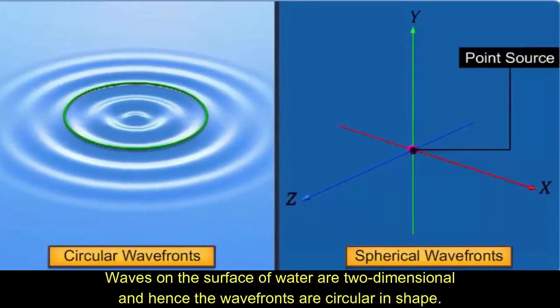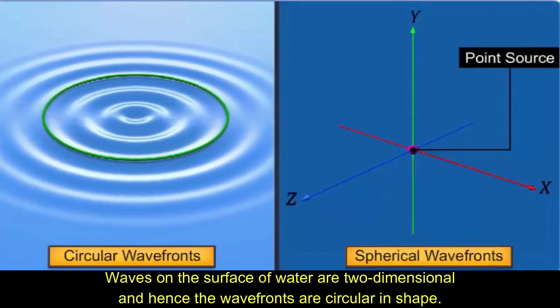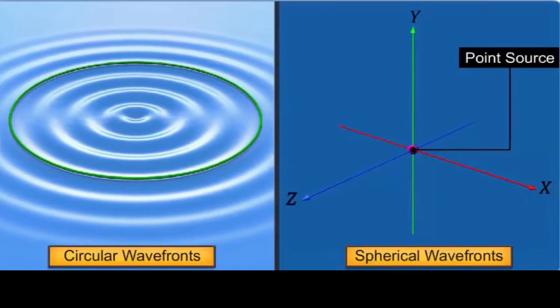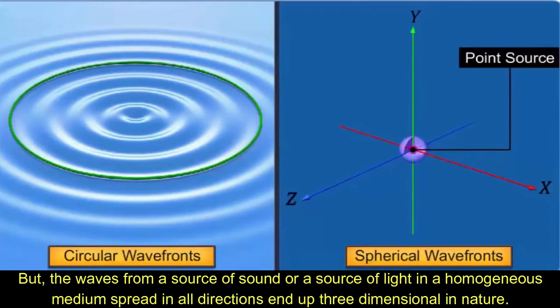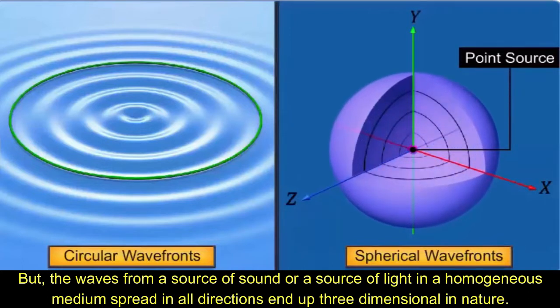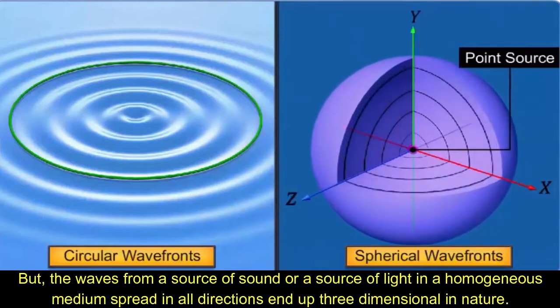Waves on the surface of water are two-dimensional and hence the wavefronts are circular in shape. But the waves from a source of light in a homogeneous medium spread in all directions and are three-dimensional in nature.